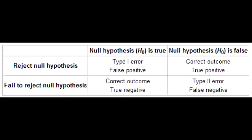What is Type 1 Error or Alpha? Type 1 Error is stating that there is an effect or difference when none exists. In this, you are mistakenly accepting the alternative hypothesis and rejecting the null hypothesis. Alpha is indicative of the probability of making the Type 1 Error. The preset Alpha level of significance is usually less than 0.05. Type 1 Error is also known as the False Positive Error.